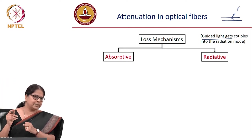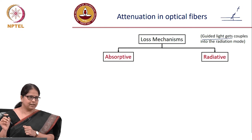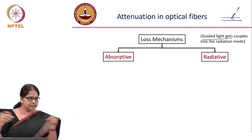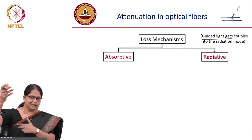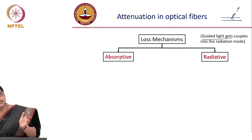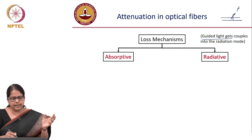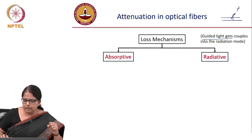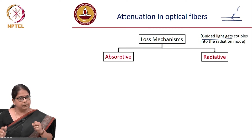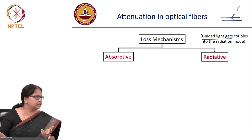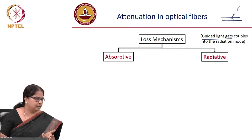In radiative loss, the energy is lost from the guided core but is available outside — it is not truly destroyed. The key distinction is: in absorptive loss the energy is completely lost and unrecoverable, whereas in radiative loss the energy is in principle available outside, even though it may be completely useless.